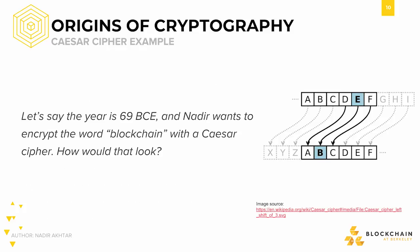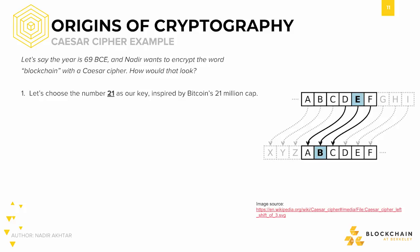Those other guarantees might be secured by other cryptographic or computer science measures, but those are out of scope for this lecture. Let's consider a scenario in which we might actually use a Caesar cipher. Let's say that in the year 69 BCE, Nadir and I are generals in the Roman army. He wants to send me a message, and we're both familiar with Caesar's famous encryption scheme. For whatever reason, he wants to send me the word 'blockchain.' Sometime when Nadir and I met in person, we decided to use the number 21 as our key, since Bitcoin has a cap of 21 million bitcoins. This means that our table would look something like the image below.